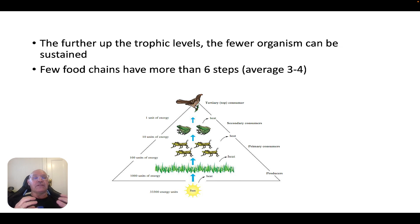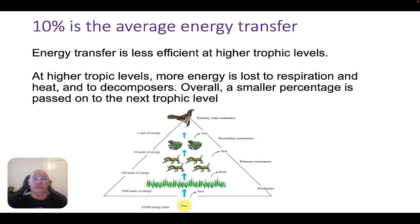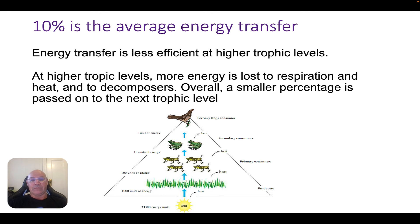There's a limit to the number of trophic levels in an ecosystem because there's less energy available as you move up. Also, as you go further up the food chain, energy flow becomes even more inefficient — at high trophic levels, more energy is lost to cellular respiration, heat, and decomposers, so a smaller percentage is passed on to the next trophic level. This may be because higher-level tertiary consumers are larger and more energetic.